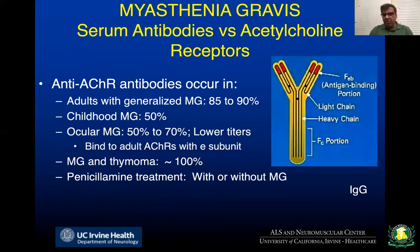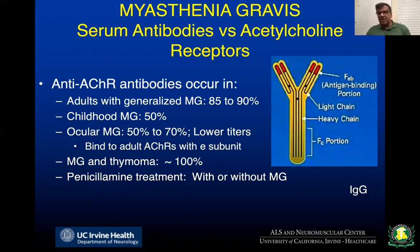The most specific test for myasthenia gravis is detection of serum antibodies against acetylcholine receptors. These are present in up to 85–90% of adults with generalized myasthenia gravis. The incidence is lower with ocular myasthenia gravis, where only 50–70% of patients may have antibodies, and childhood myasthenia gravis has an even lower incidence of about 50%. False positives can occur with thymoma patients and with D-penicillamine treatment, which can induce a true seropositive myasthenia gravis that responds to discontinuation of the drug.